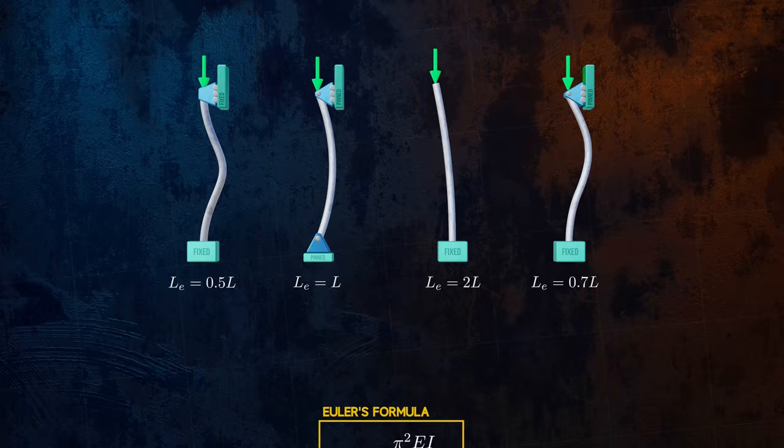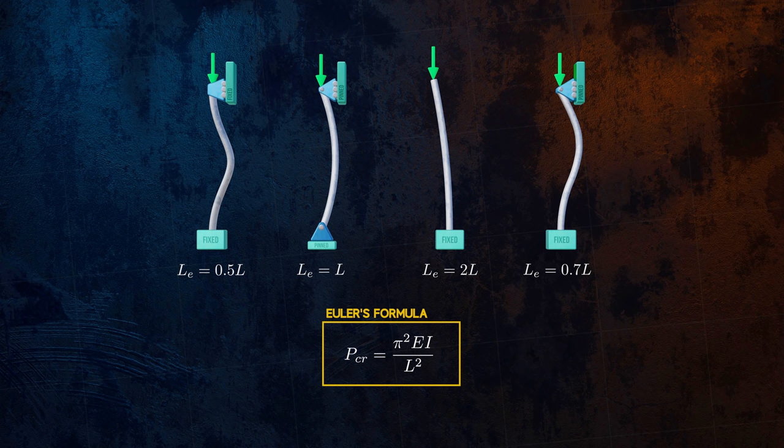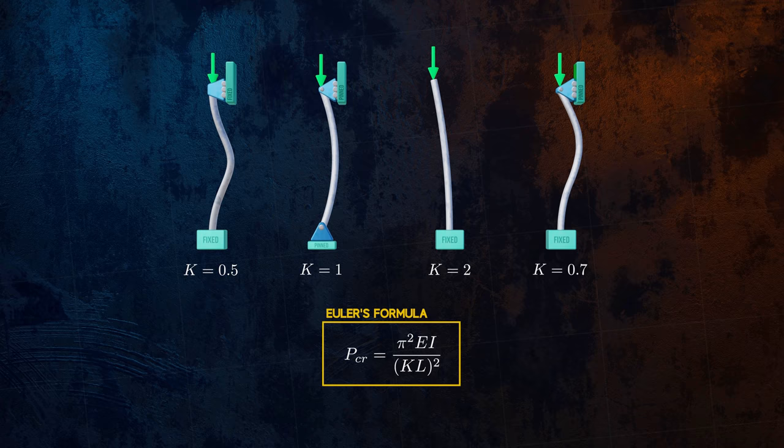We can replace the column length in Euler's formula with the effective length to make the equation applicable for all of these end conditions. Or we can keep the column length and add in an effective length factor k. End conditions clearly make a huge difference to the critical buckling load, and must be considered very carefully.